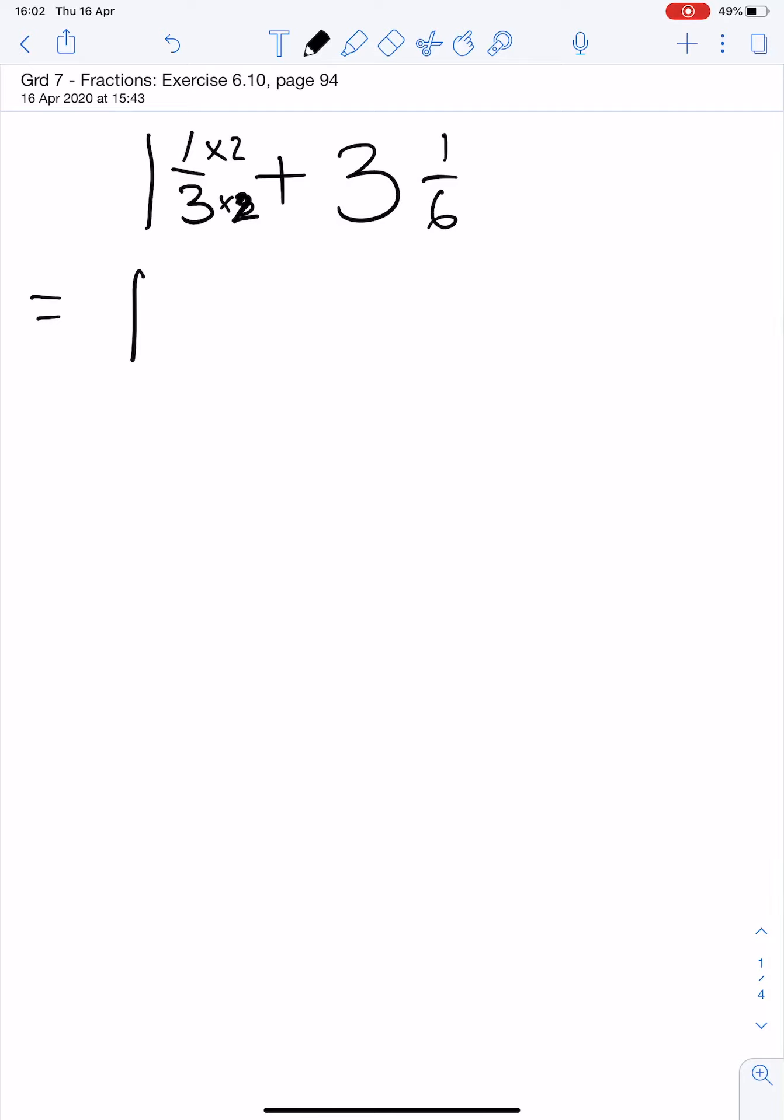So your new sum will be 1⅔ plus 3⅙. Denominators are the same so we can go ahead and add. Whole numbers first, 1 plus 3 is 4. Numerators: 2 plus 1 is 3 and they are both over 6. We can simplify that answer. Whole number stays the same and if we divide top and bottom by 3 we will get 4½.